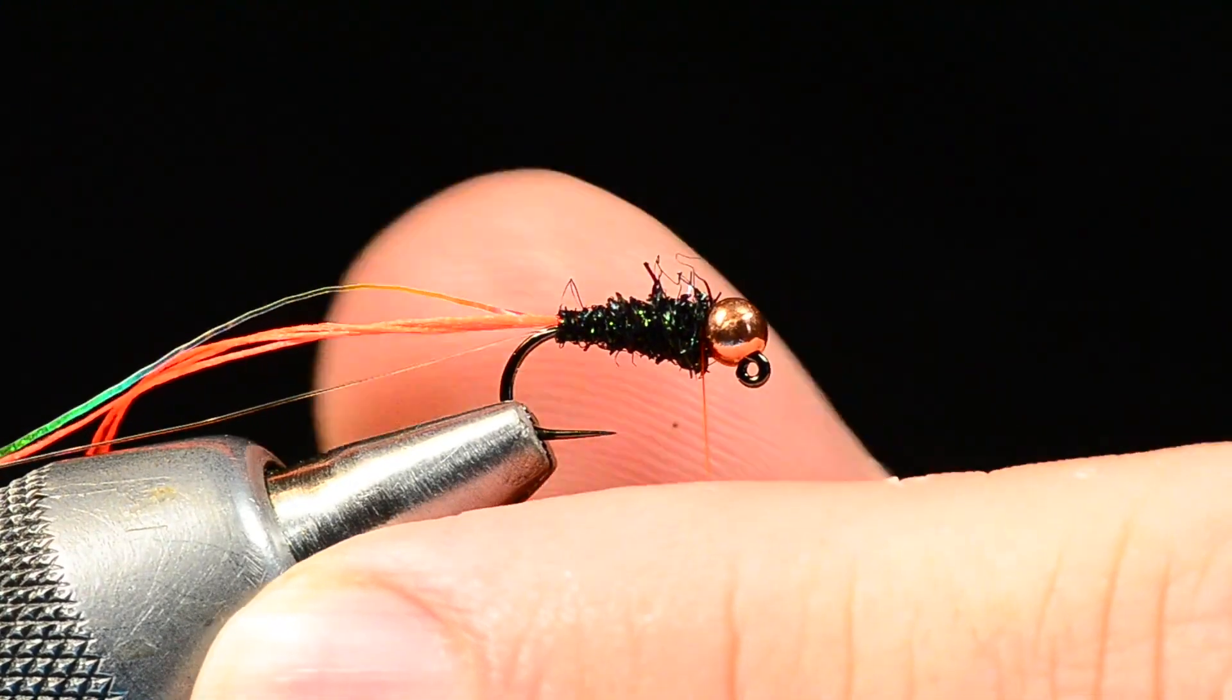Then I'm going to rib through with the tinsel or the flash. I'm going to take this and go over the top in the conventional direction. I'm going to rib through that body with five or six turns and I'll tie that flash off with just a turn or two.